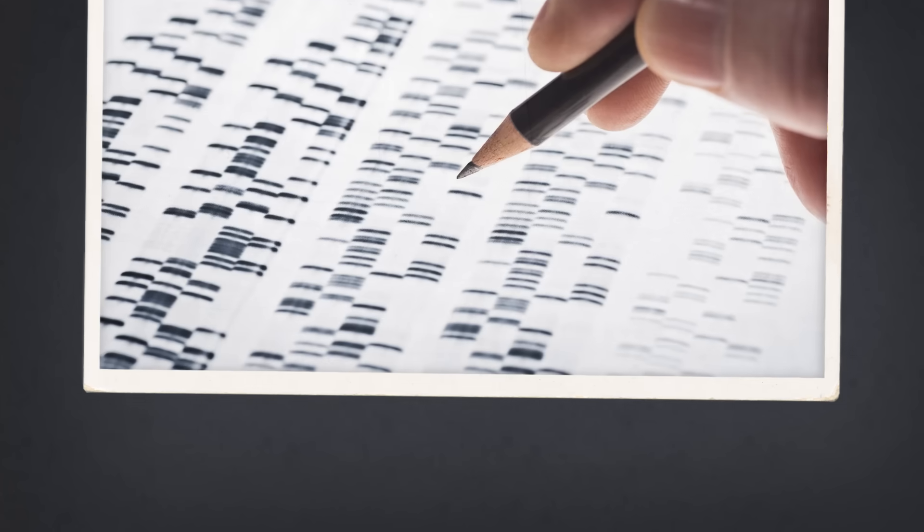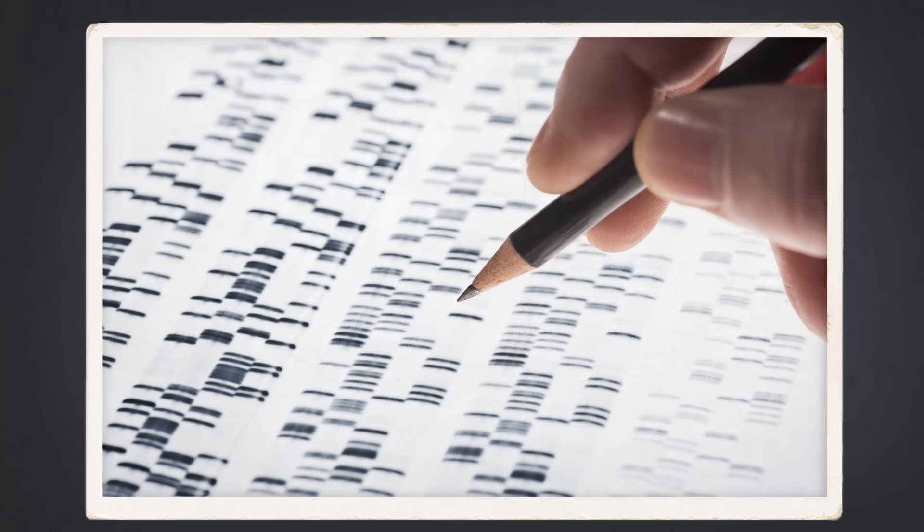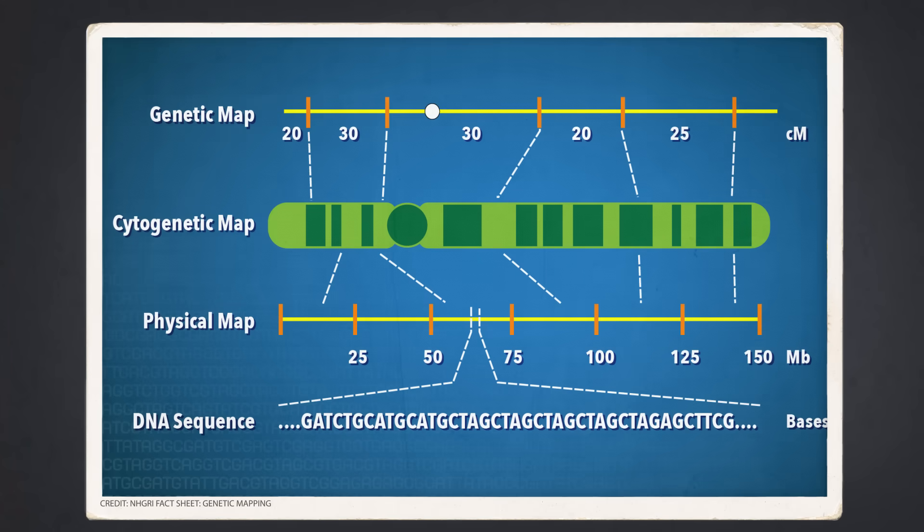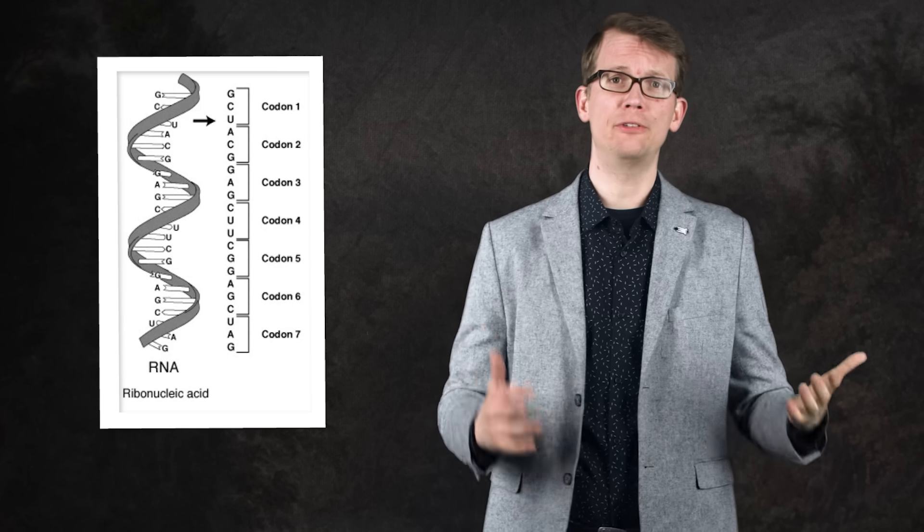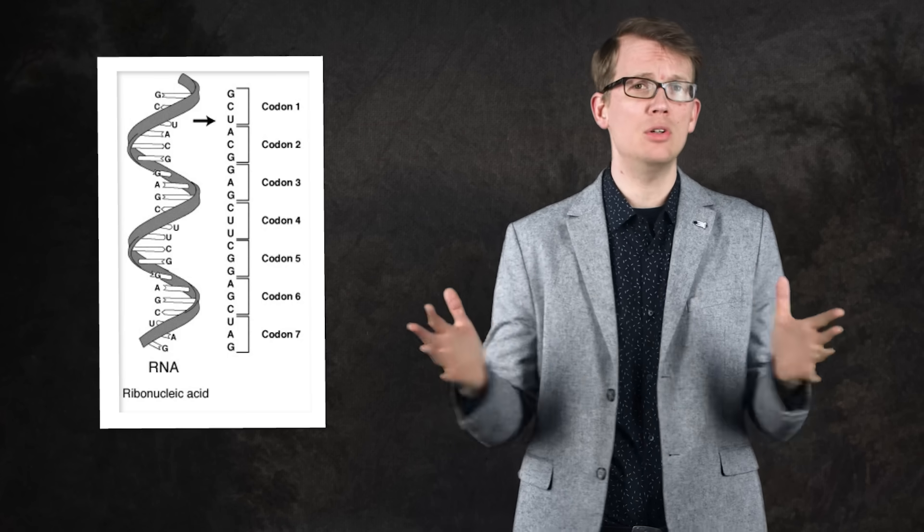Even though Darwin suggested that there was a universal common ancestor, we couldn't even guess what it might have been until we started to master genomics, the science of mapping and studying the genetics of all living things. Today, we know that all life uses the same molecules of RNA, DNA, and protein. And the genetic code that's responsible for making that stuff is basically universal.